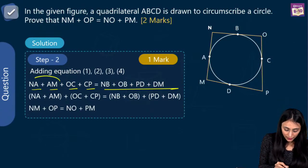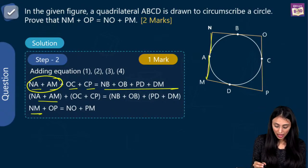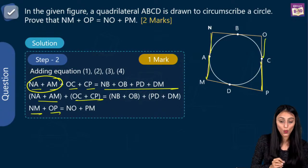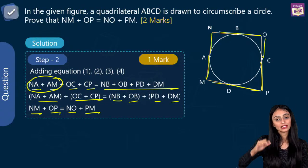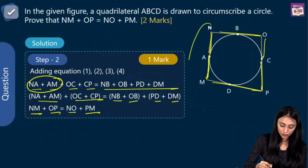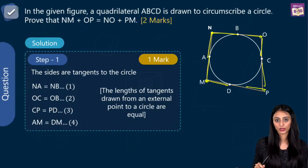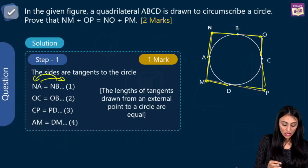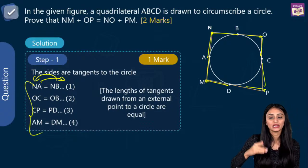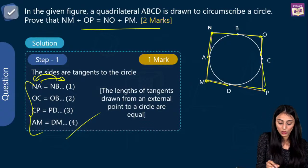What we are going to do here is add them up. NA plus AM gives us NM — the entire length. OC plus CP gives us entire length OP. NB plus OB gives us entire length NO. And PD plus DM gives us PM. If you write them in this way, it's very simple to add them up because NA plus AM will give you NM. But suppose you write NB over here and NB over here — then you won't be able to add them all up. So you have to be really careful while adding them, otherwise students are not able to figure out why they cannot reach the final conclusion.